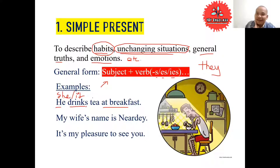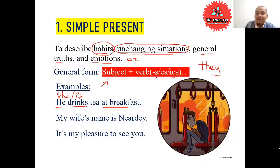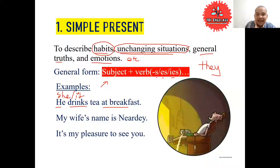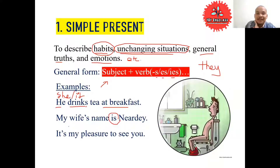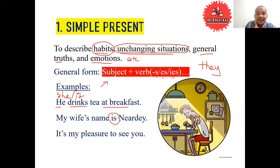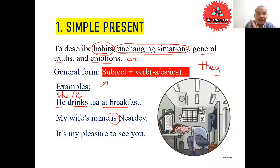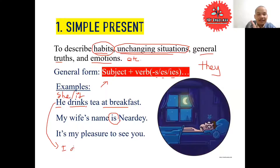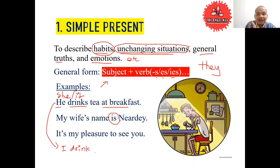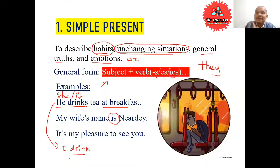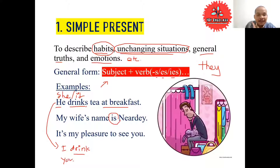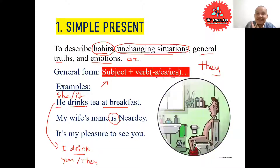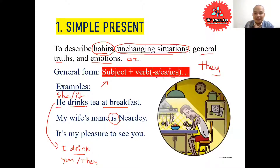We use the base form. For example, my wife's name — with 'is,' that's verb to be used with the subject. When I say 'I,' I say 'I train' — I don't add S to the verb. When you say 'you,' also 'you train.' When you see the subject 'they,' also 'they train' — we don't add S. That is simple present.